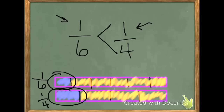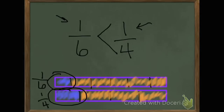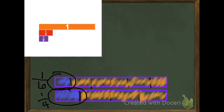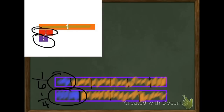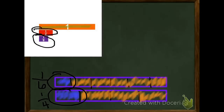If I look at my scarf, I can see that the 1 sixth is smaller than the 1 fourth. So, the smaller the denominator, the bigger the part, the bigger the fraction. If you look at the fraction strips here, here is my 1 whole, and here I have 1 fourth compared to 1 sixth. And just by looking at it, I can tell that 1 sixth is less than 1 fourth.